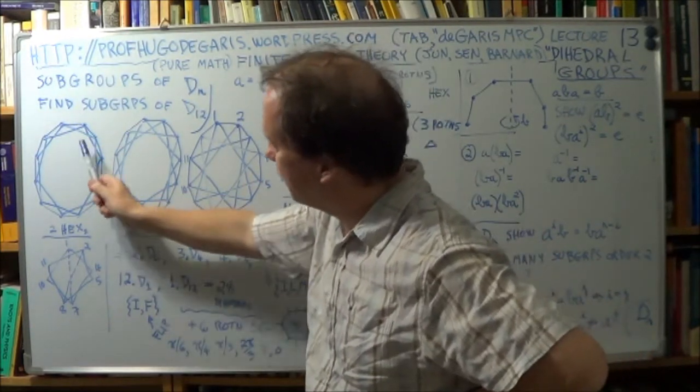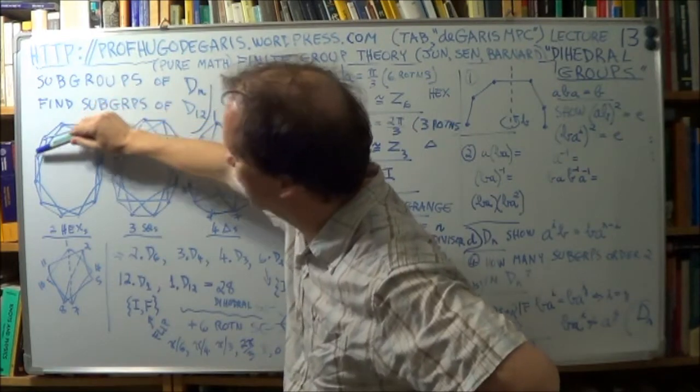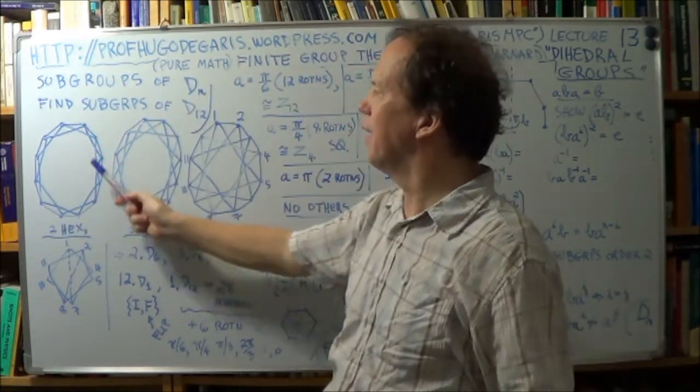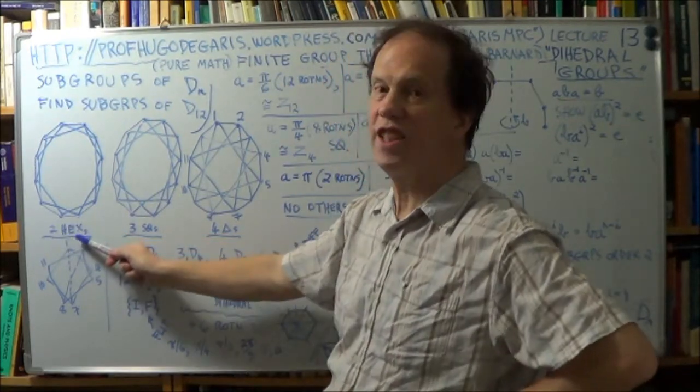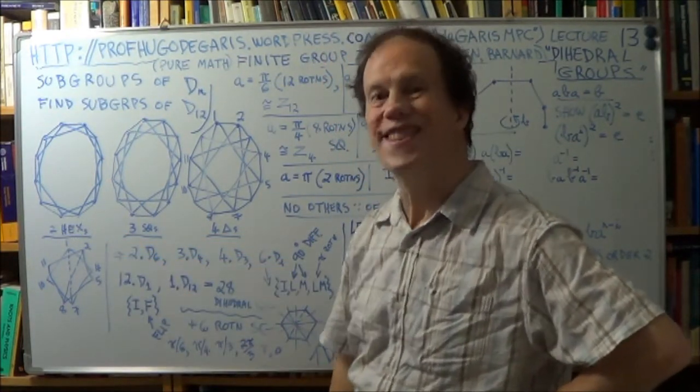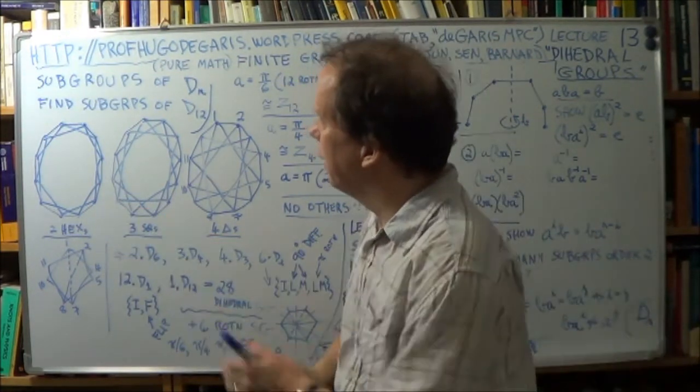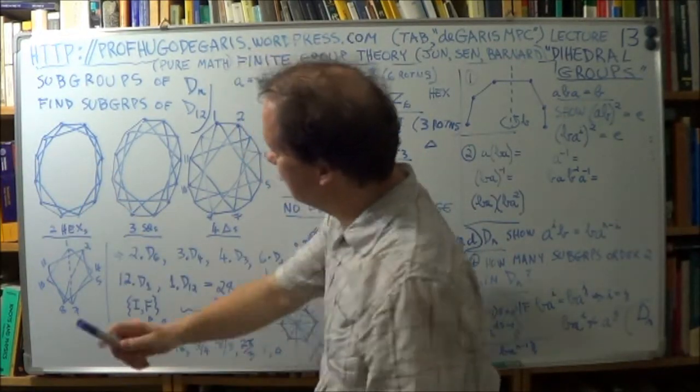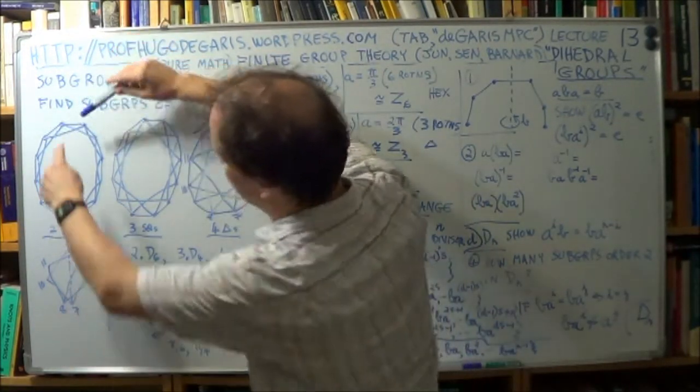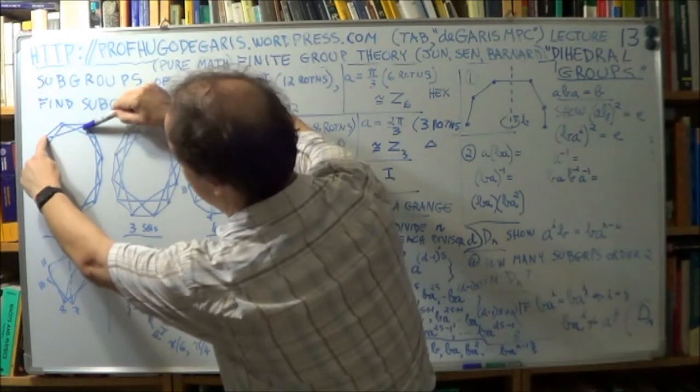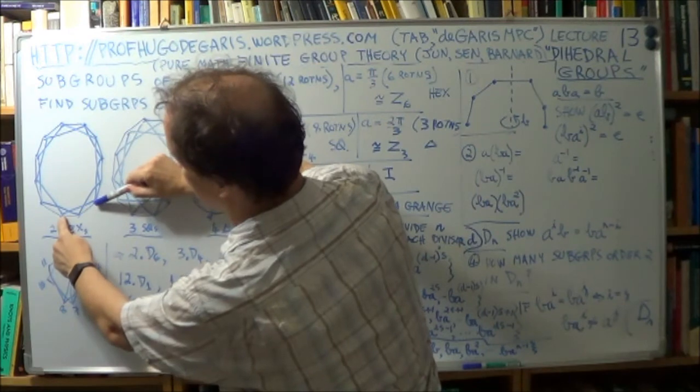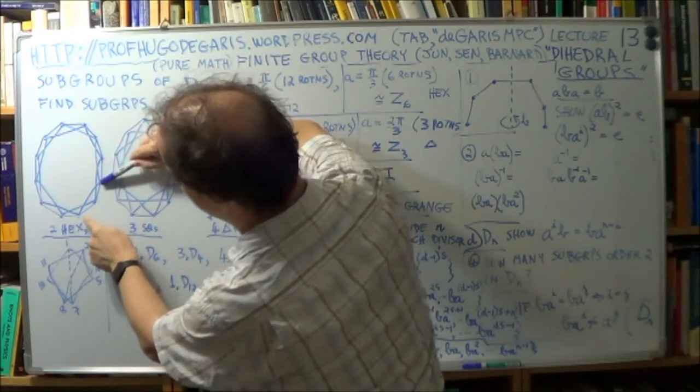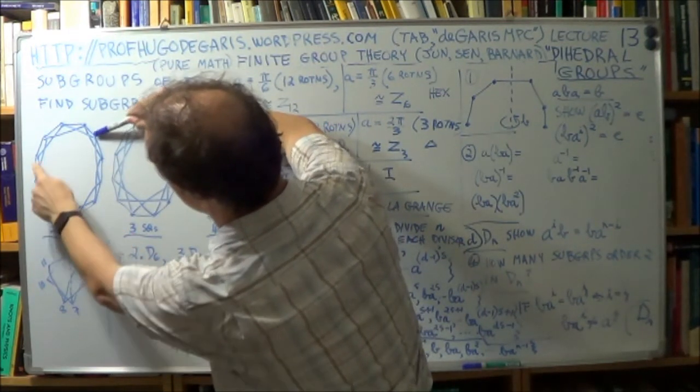Now, inside this duodecagon, this 12-gon, I have drawn two hexagons, two six-gons, if you like. I don't know if you can see, like, this here, to here, to here. There's one hexagon, and then you've got another one, here, to here, to here.